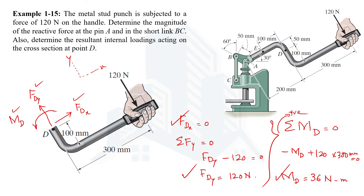So we have now calculated all the required parameters asked in this example. This video covered the calculation of reactive forces at a pin and in a short link, and the determination of resultant internal loadings at a cross-section at point D. Thank you for watching.